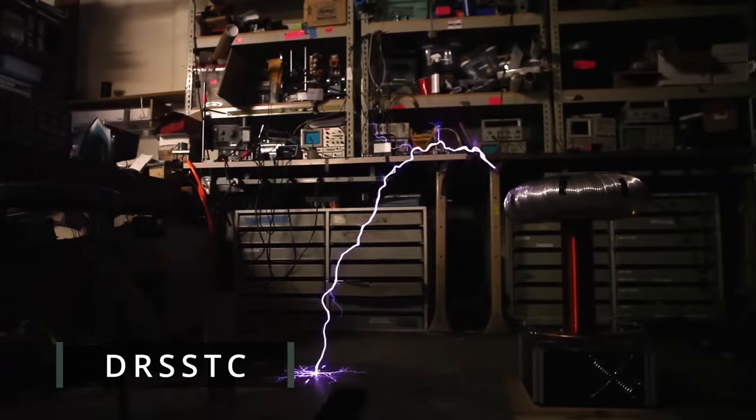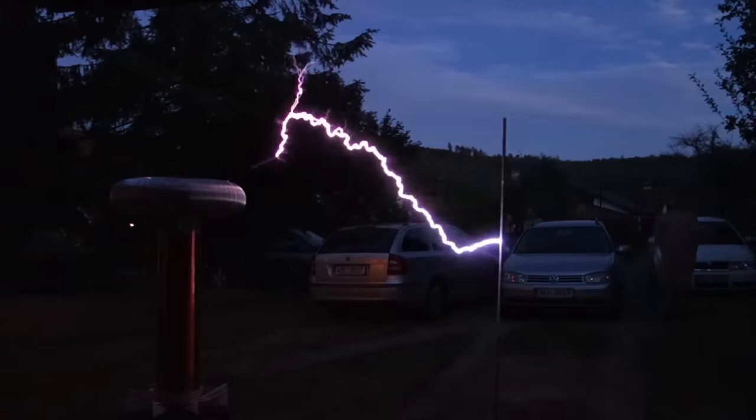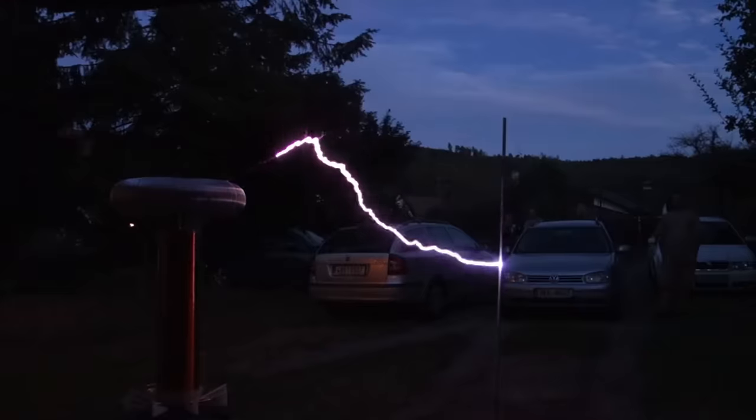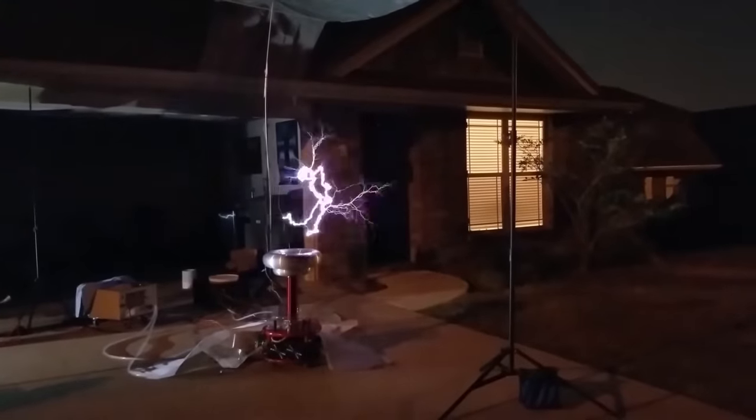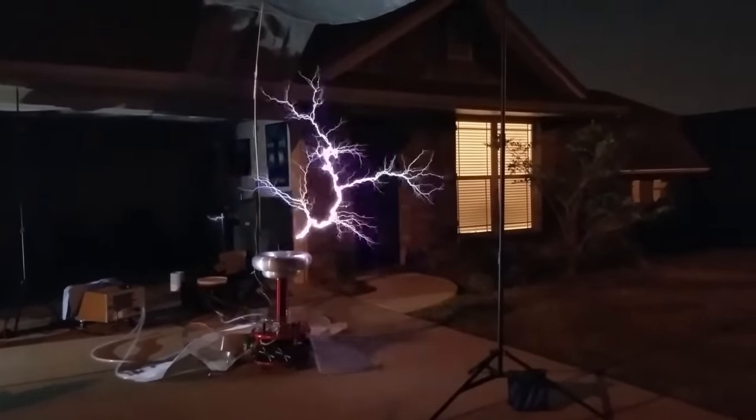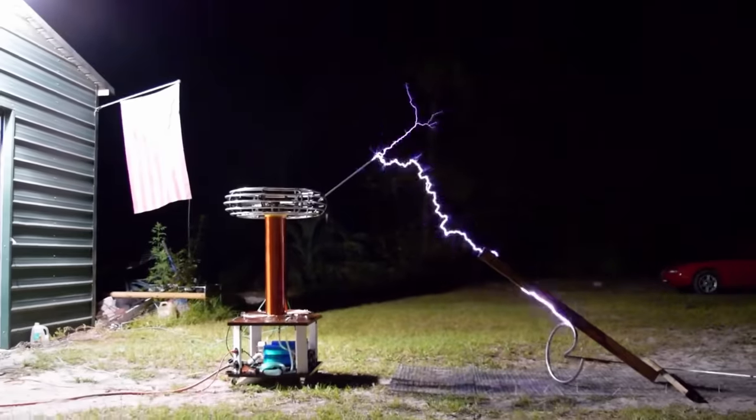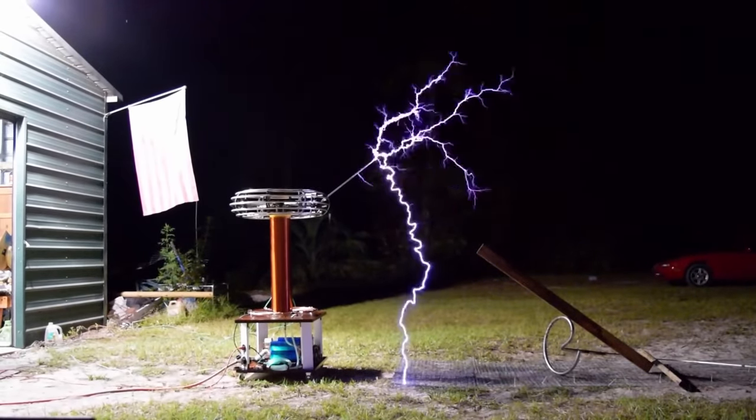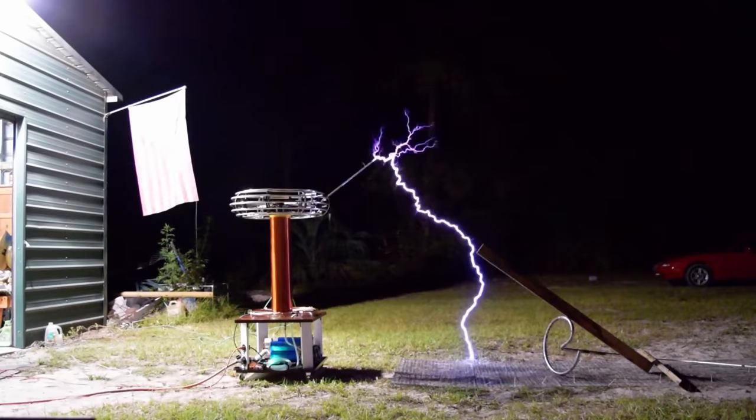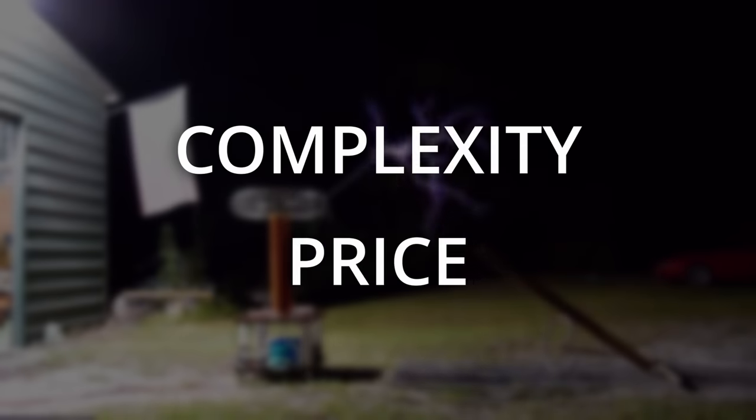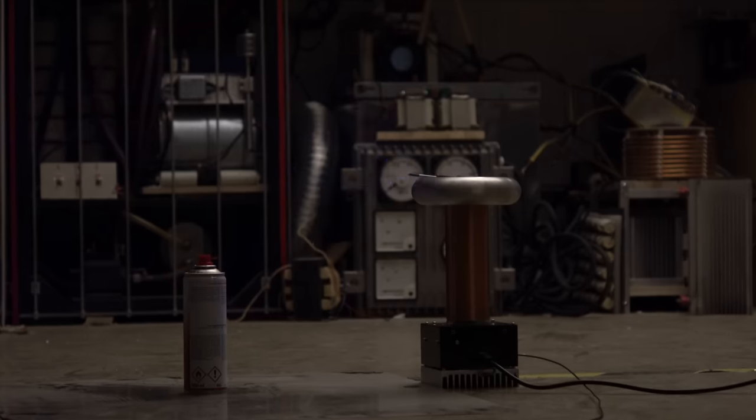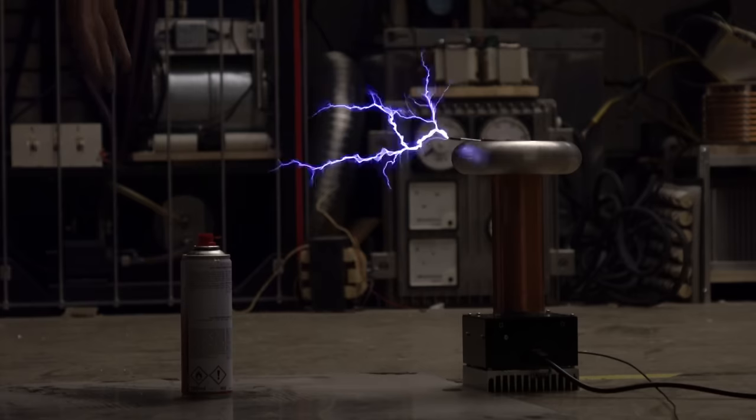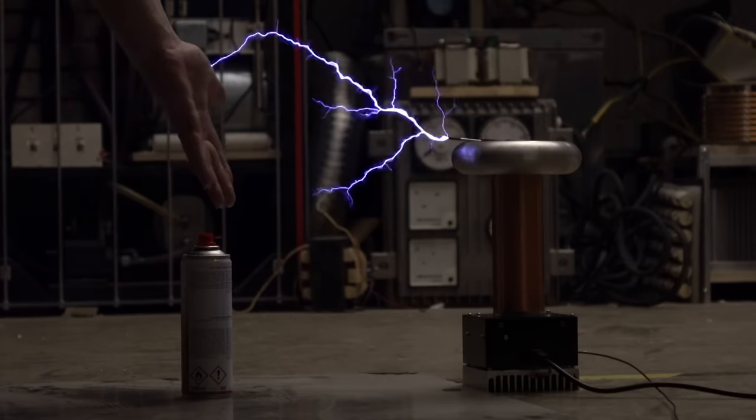The DRSSTC. The dual resonant solid state Tesla coil, or DRSSTC, is quite frankly nothing short of an engineering masterpiece. A well-built machine can easily produce lightning bolts several times longer than the coil itself, which is a feat not even Nikola Tesla himself could manage in his day. For years, it has been my dream to build one, but two things have kept me from doing so. The complexity and the price.